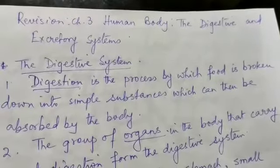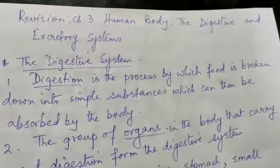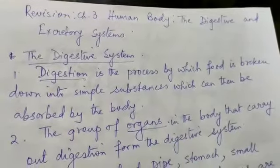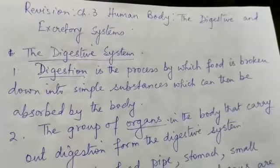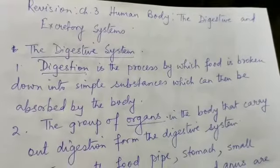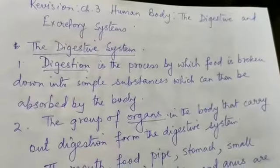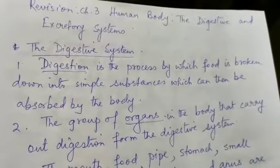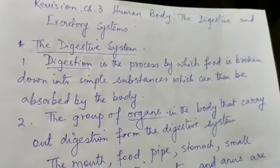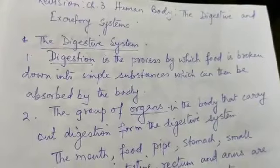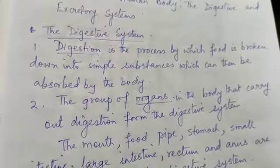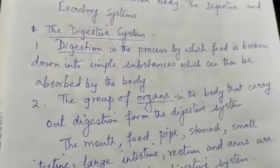First let us learn about the digestive system. What is digestion? Digestion is the process by which food is broken down into simple substances which can then be absorbed by the body. And the group of organs in the body that carry out digestion form the digestive system.